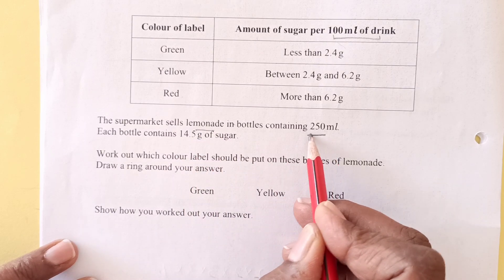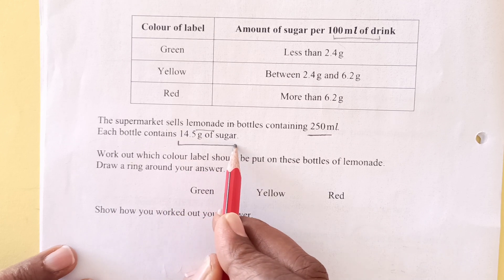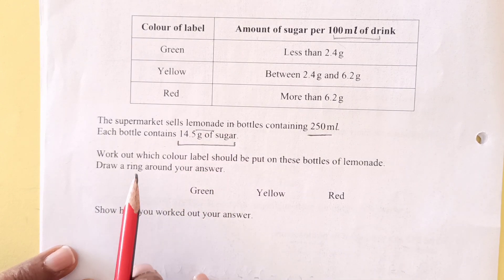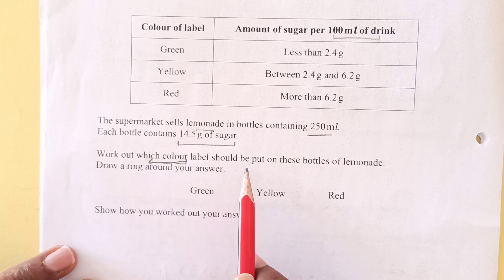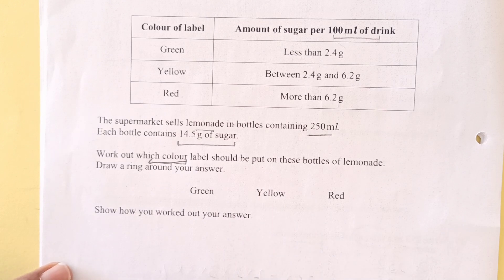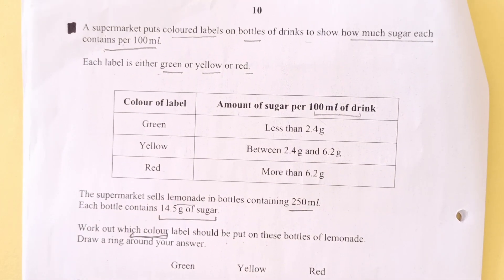The supermarket sells lemonade in bottles containing 250 ml. Each bottle contains 14.5 grams of sugar. Work out which color label should be put on these lemonade bottles. Draw or ring around whatever color we need to put here.